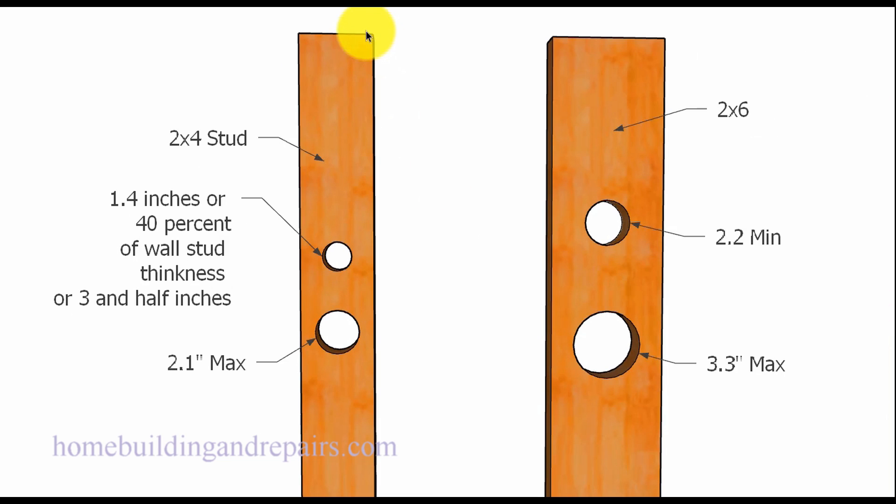Let's take a look at the wall studs and give you an idea what I'm talking about when I say 40% of the wall stud width. 40% on a 2x4 is 1.4 inches, a little over 1 3/8, a little under 1 1/2 inches. Maximum is going to be 60% of the wall stud thickness. You cannot drill more than 60% of the wall framing studs thickness, and on a 2x4 that's going to be 2.1 inches.